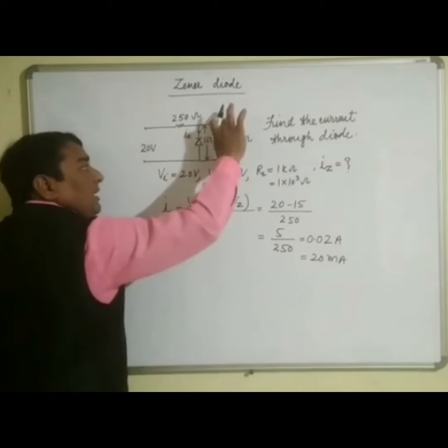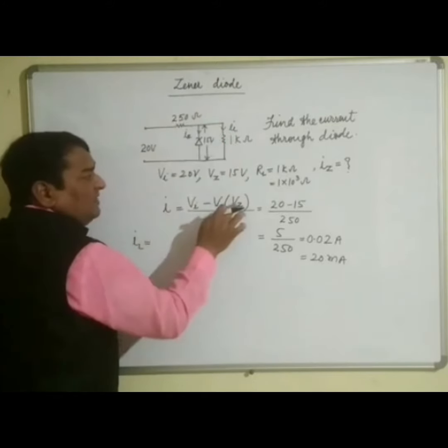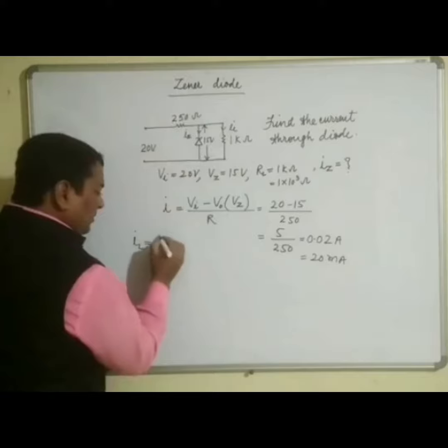So always you know V0 is equal to Vz under all conditions we have discussed right now. So Vz is given to you, so its value is 15 volt.